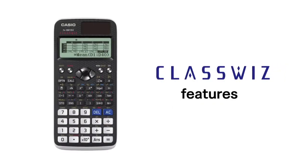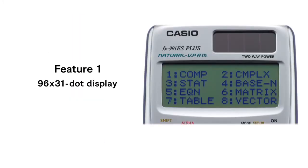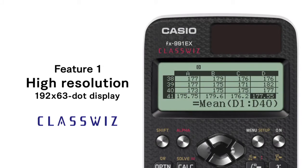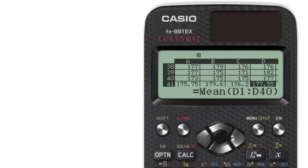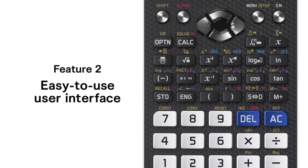Let's look at some key features of the ClassWiz. The calculator is equipped with a high-resolution LCD display with four times the resolution of previous models. Superb usability takes full advantage of the improved display capabilities, and color-coded key functions make the interface easy to use in classrooms.